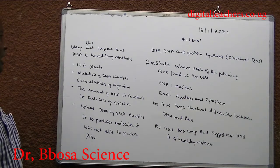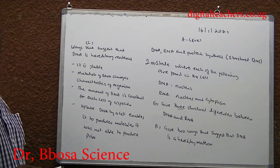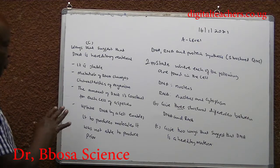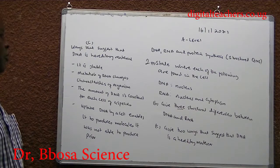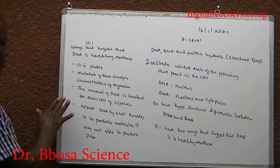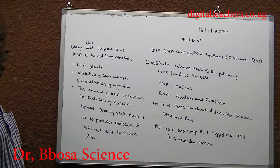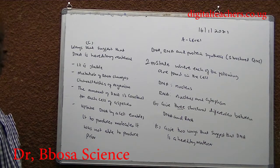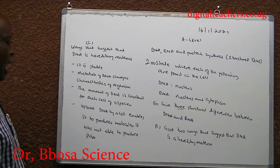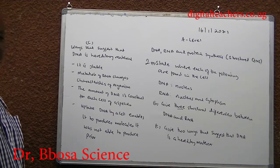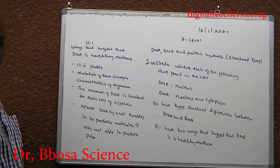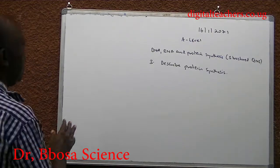Ways that suggest that DNA is hereditary material: 1. It is very stable. 2. Mutation of DNA changes characteristics of an organism. 3. The amount of DNA is constant for each cell of a species. 4. Uptake of DNA by a cell enables it to produce molecules it wasn't able to produce prior.